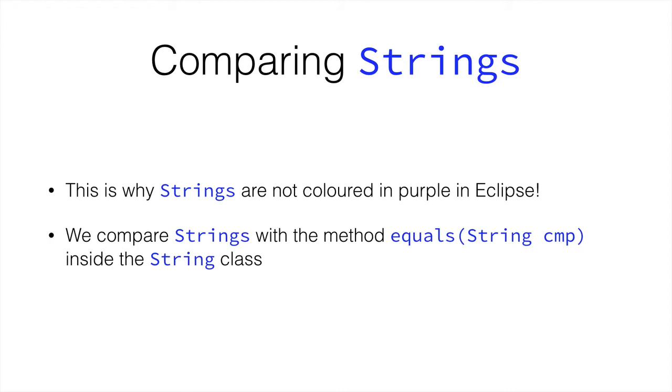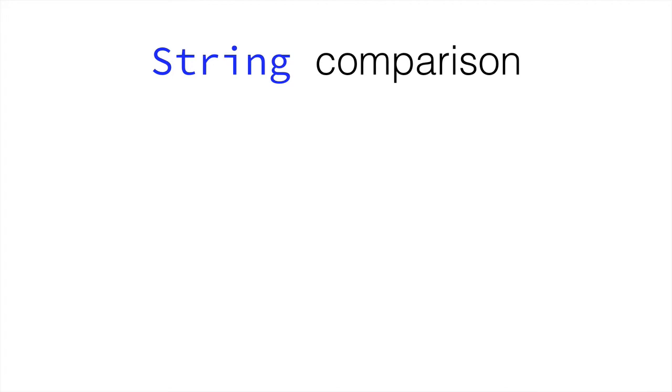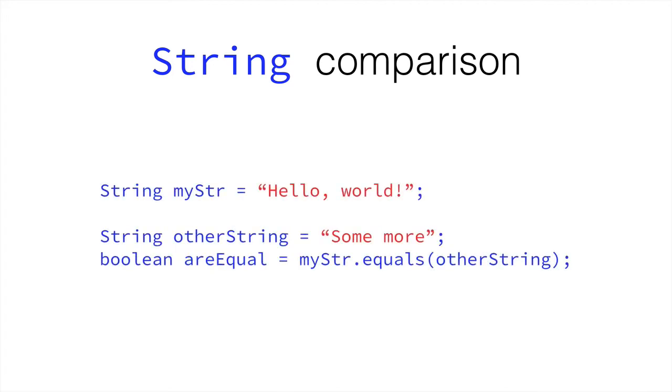Just like so. Let's say we have a string called myStr, and this equals hello world. And then some other string, which equals some more. In order to compare both, we would say, let's call the equals method of myStr by doing myStr dot equals, and then compare myStr to the other string. This will return either true or false, as we've seen. The method can return values. In this instance, boolean areEqual would be false, because hello world and some more are not equal.